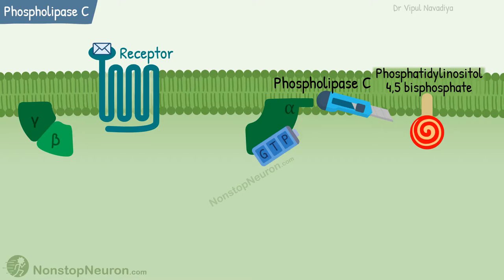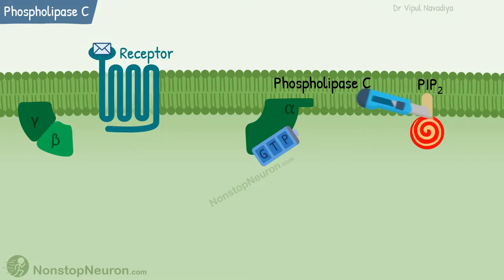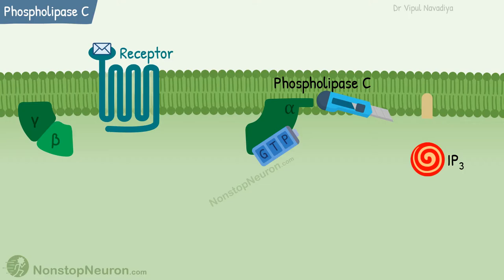The active enzyme then interacts with phosphatidyl inositol-4,5-bisphosphate, or PIP2 in short. PIP2 is one of the phospholipids found in the cell membrane, mainly distributed in the inner leaflet of the bilayer. Phospholipase C breaks it down into inositol-1,4,5-trisphosphate, or IP3, and diacylglycerol, or DAG.